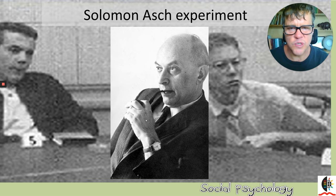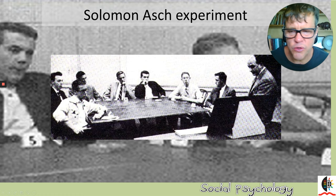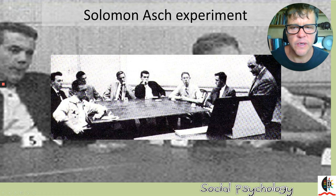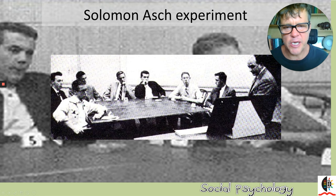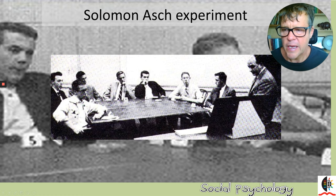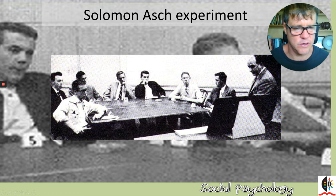In Asch's experimental setup, you the subject come in and are seated second from the end. All the other subjects in the room are actually confederates — placed there by the experimenter with pre-programmed behavior, but you don't know that. The experimenter shows the lines and asks each individual which is the matching line. Everyone gives the correct answer in turn, and you give the correct answer too. This continues through multiple rounds.